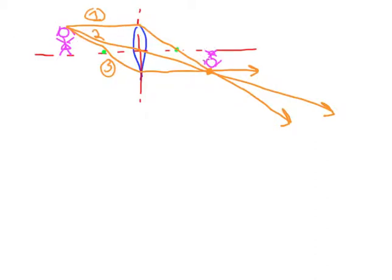Let me define a couple things. We'll call this height of the object, and then this height of the image. From the plane of the lens over to here is the object distance o, and from the plane of the lens to the image is the distance i.